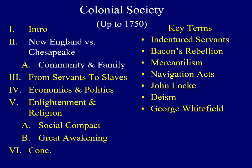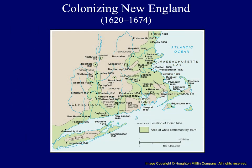The first topic will be a comparison between New England society and life along the Chesapeake. The third lecture described the early history of the New England colonies, but just as a little review, this map identifies most of the colonies included in New England. The region includes today's states of Connecticut, Rhode Island, Massachusetts, Vermont, New Hampshire, and Maine.